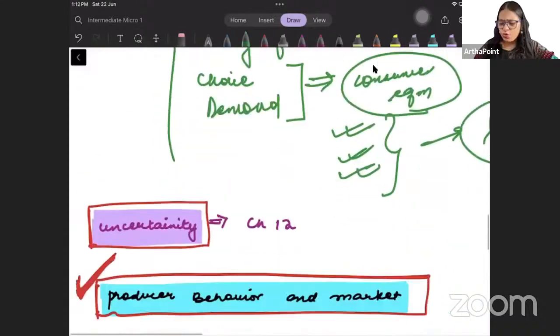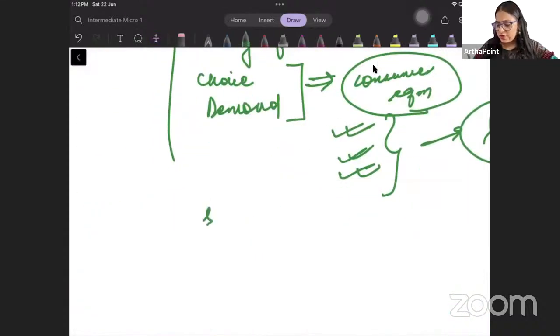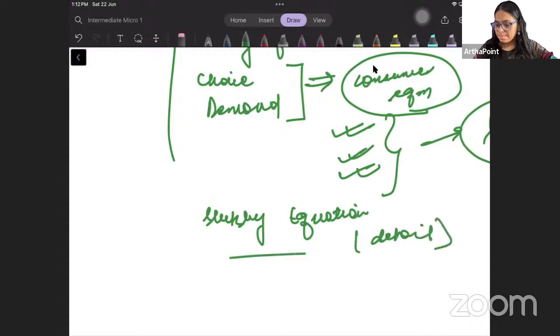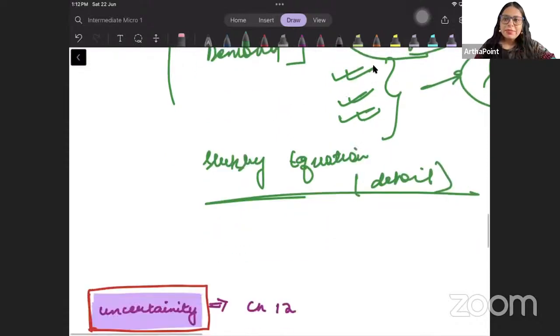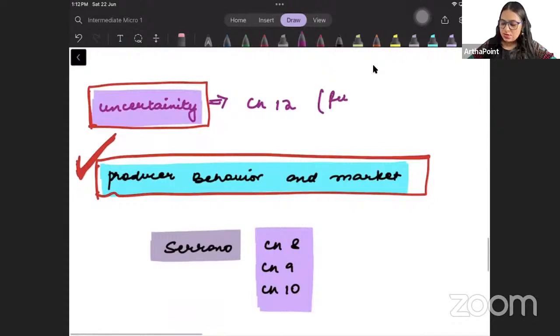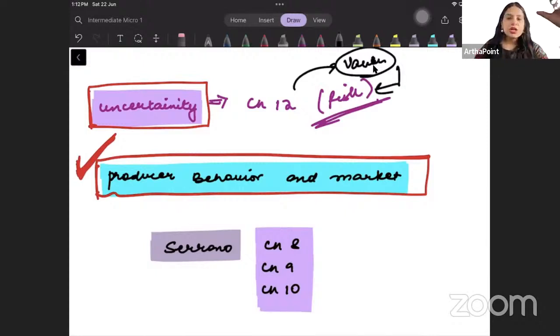We will talk about how to find consumer equilibrium under different cases. One sure short question on this will come in the final exam. Then we will talk about Slutsky equation, a very important chapter. I will talk about Slutsky equation in detail. Then we will talk about uncertainty and risk. We will do this from Varian. For the first time we are doing this from Varian - for many years the risk chapter was never done from Varian for economic honours. This is the first time that this chapter is picked up from Varian.